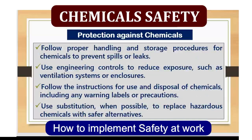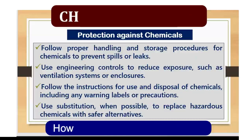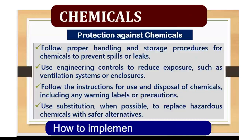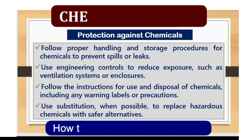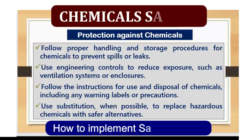Number two: follow proper handling and storage procedures for chemicals to prevent spills or leaks. Number three: use engineering controls to reduce exposure, such as ventilation systems or enclosures. Number four: follow the instructions for use and disposal of chemicals, including any warning labels or precautions recommended by the manufacturer. Number six: use substitution when possible to replace hazardous chemicals with safer alternatives.